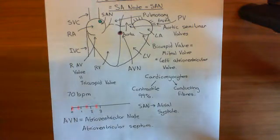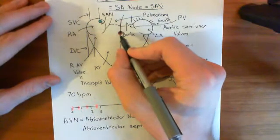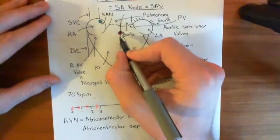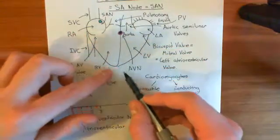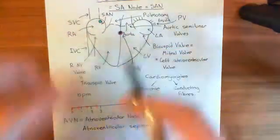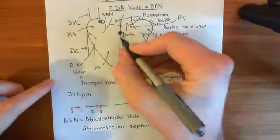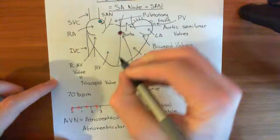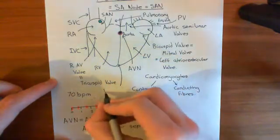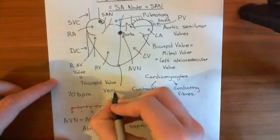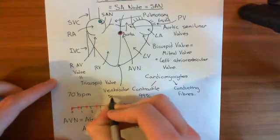So the atrioventricular node: the action potential is going to conduct down. We need the action potential to go down to the base of the heart before we release it on the contractile cardiomyocytes. The big thick wall between the two ventricles — between the right and left ventricles — is known as the ventricular septum of the heart.